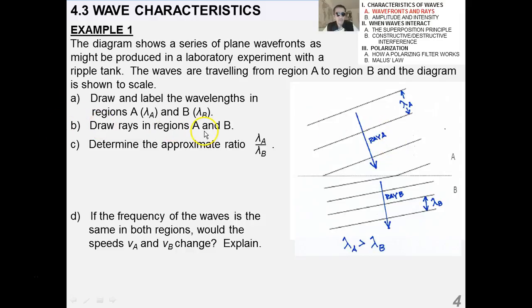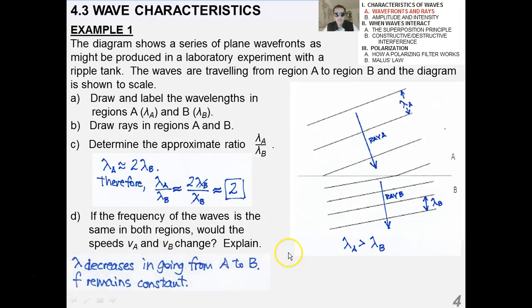What's the approximate ratio? Lambda A to lambda B? It's about twice, right? So, the ratio is about two. If the frequency of the waves is the same in both regions, would the speeds VA and VB change? Of course, they would. V is going to decrease.